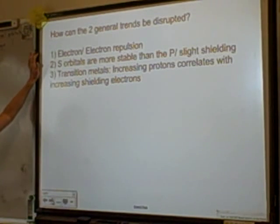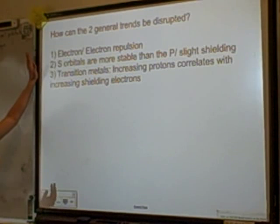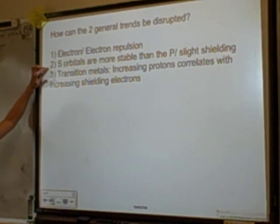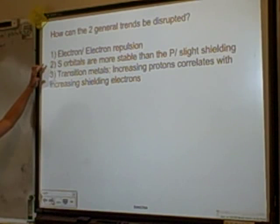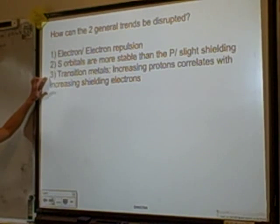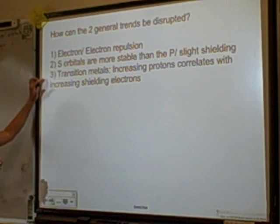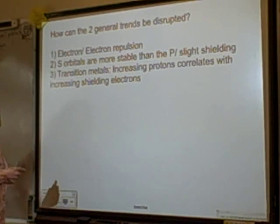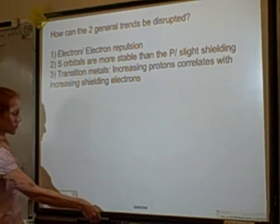The first exception is electron-electron repulsion. Two electrons in an orbital are a little less stable than one electron in an orbital. The second is that S orbitals are a little more stable than P orbitals — there's slight shielding because the S's spend more time closer to the nucleus than the P's. The third is transition metals: as you go across them, you're adding one proton for every one shielding electron, so the shielding is actually increasing.